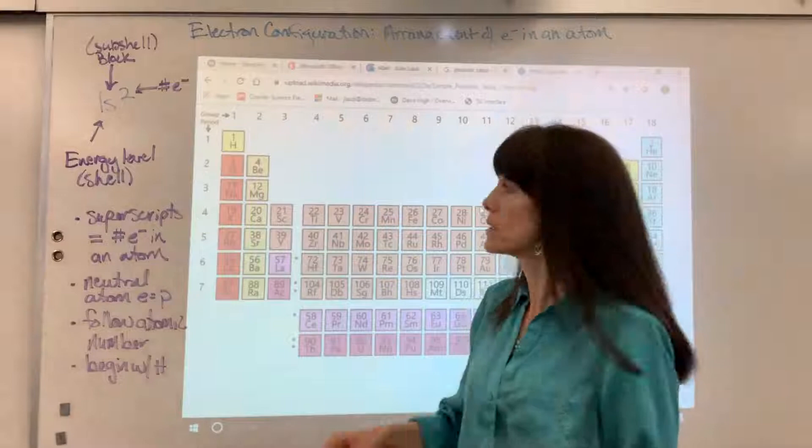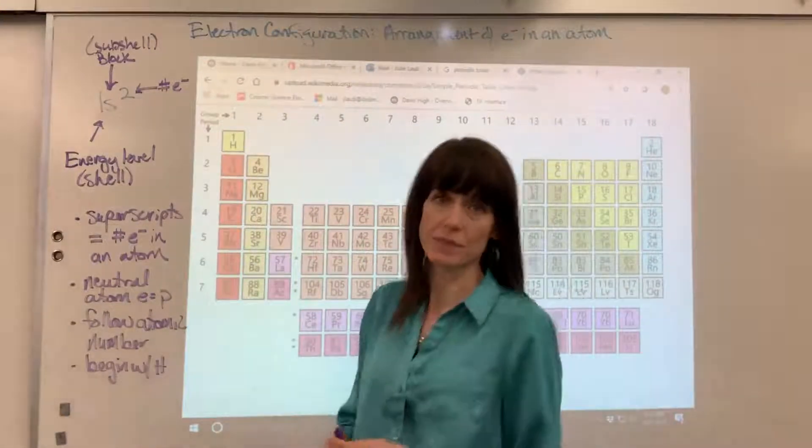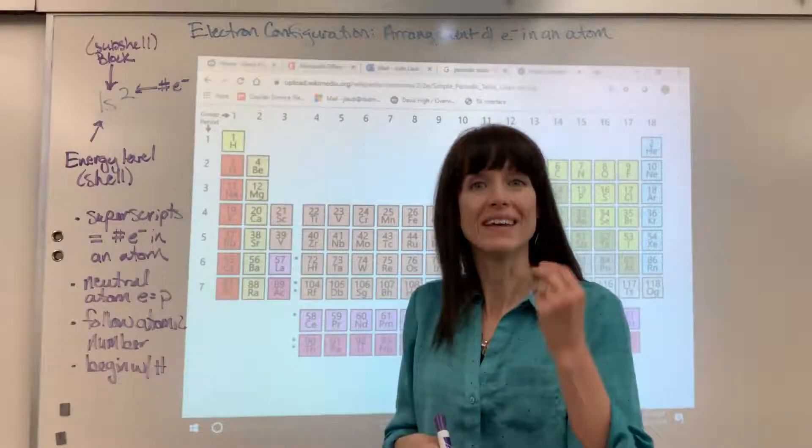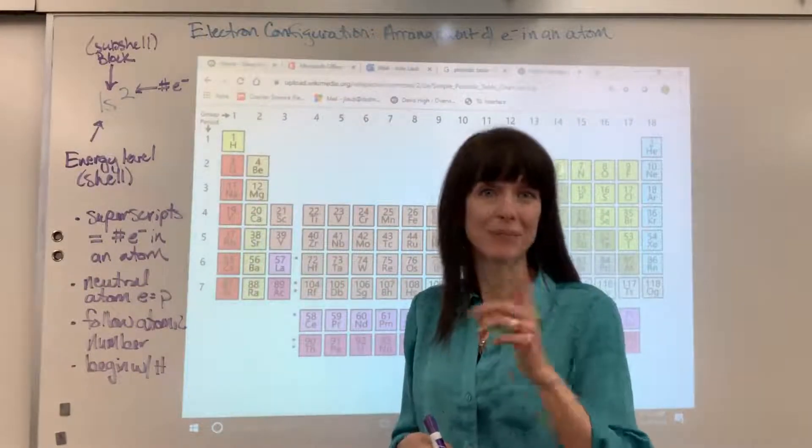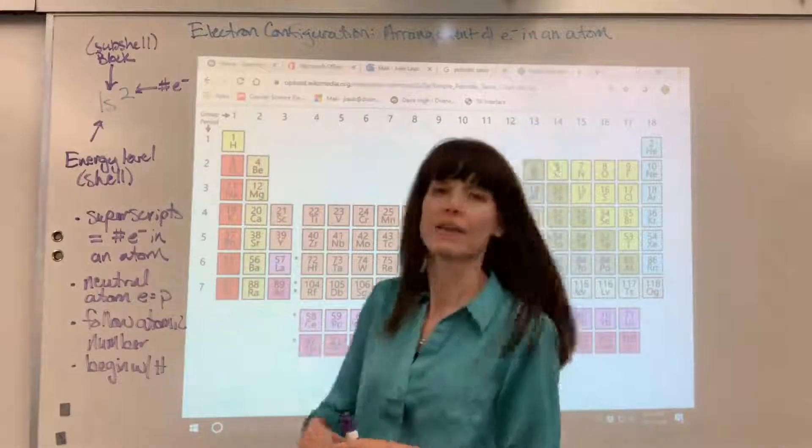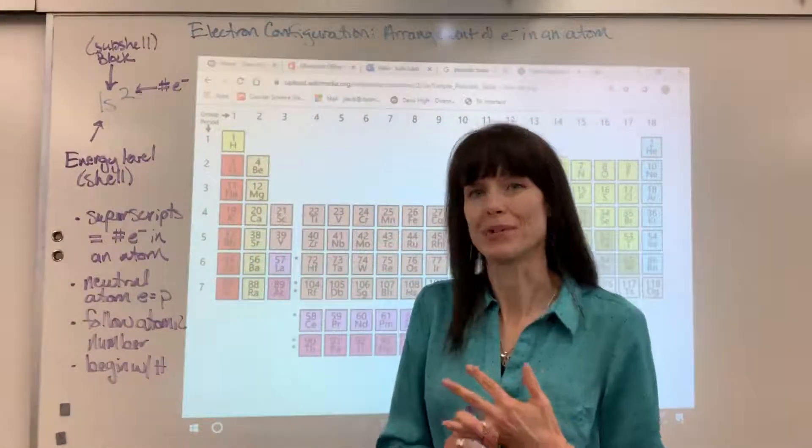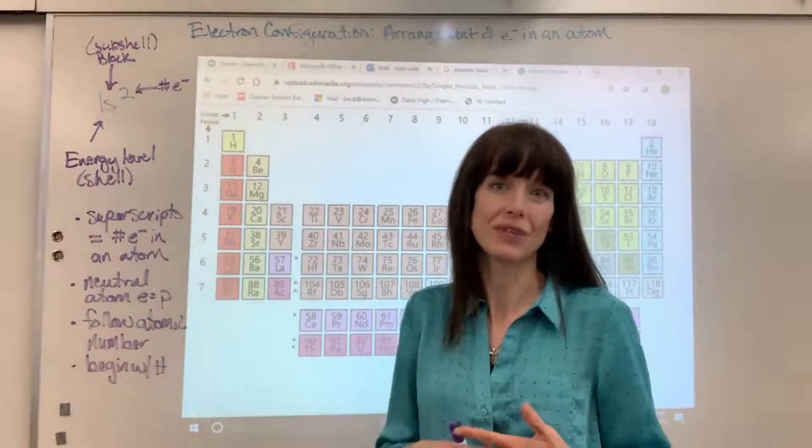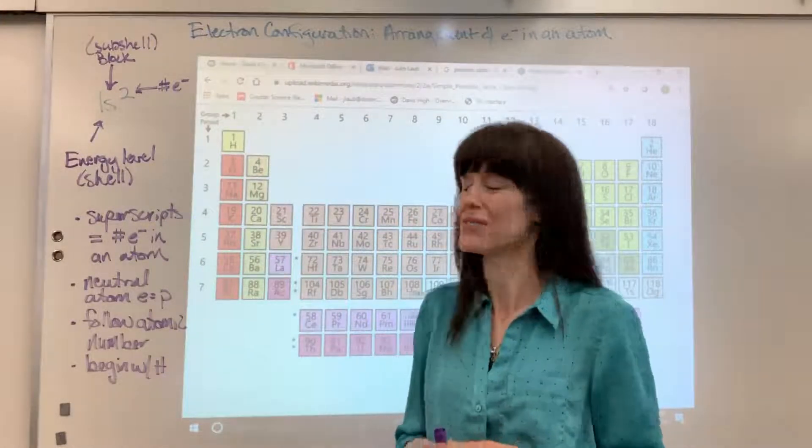A couple of notes: the number of superscripts, if you sum all the superscripts in an electron configuration, that equals the number of electrons in that atom. Remember that neutral atoms, the electrons and the protons equal each other. Everything that I do in this video is going to be for neutral atoms. There's another video for ions and electron configuration.